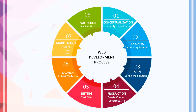The web development process has eight stages: first, conceptualization; second, analysis — to gather requirements; third, design — to define the solutions; fourth, production — to create content and construct the website; fifth, testing the site; sixth, launch and publish the website; seventh, maintenance — to fix or enhance the website; and eighth, evaluation — to review the website.